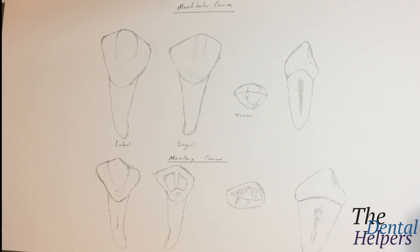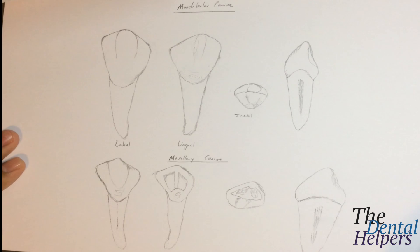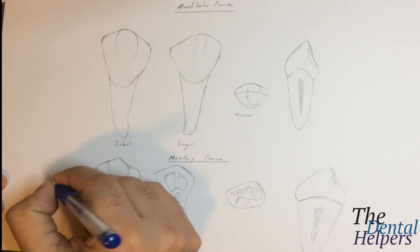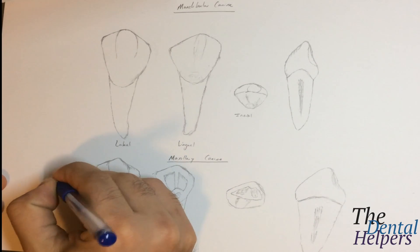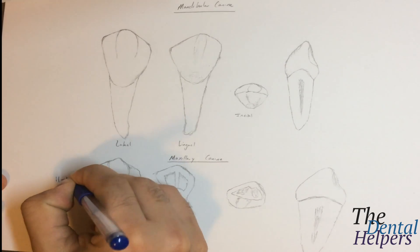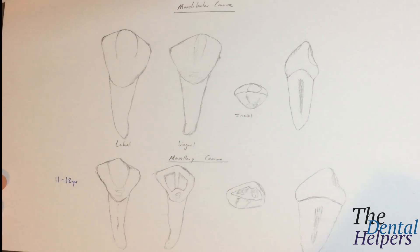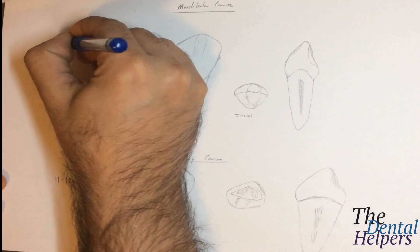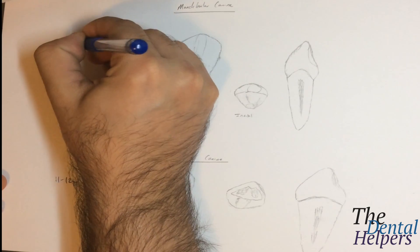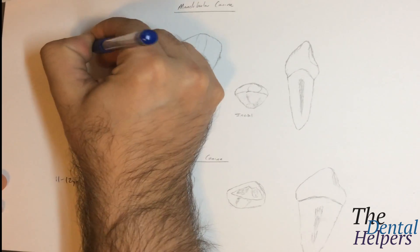We're going to look at the mandibular canines and the maxillary canines, and let's start with the eruption. The maxillary canine is going to erupt around 11 to 12 years old, while the mandibular canines are going to come out around 9 to 10 years old.